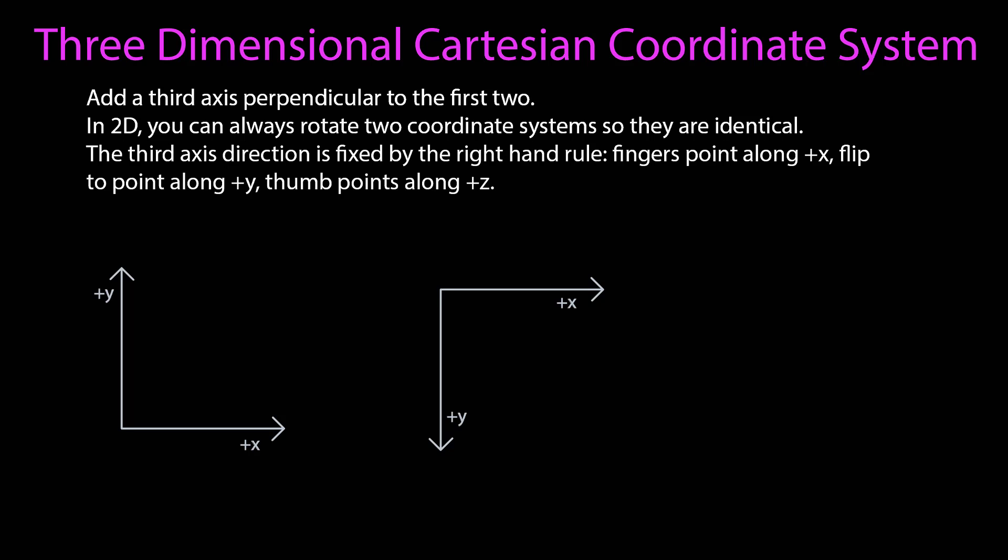The direction is fixed by the right-hand rule. And what the right-hand rule is, in this case, is you point your fingers along the positive x-axis. You flip them to point along the positive y-axis. And when you can do that, then your thumb points along z.